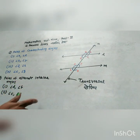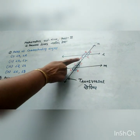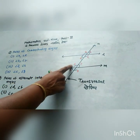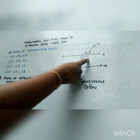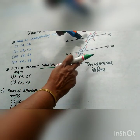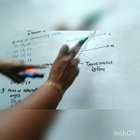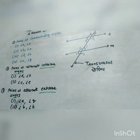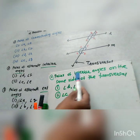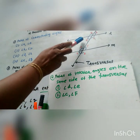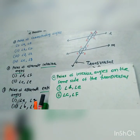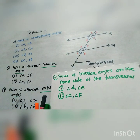Pairs of alternate interior angles: angle D and F is a pair of alternate interior angles. Similarly, angle C and E is also a pair of alternate interior angles. Angle A and G, and angle B and H are pairs of alternate exterior angles. Pairs of interior angles on the same side of the transversal: angle D and angle E, and angle C and angle F — these are 2 pairs.